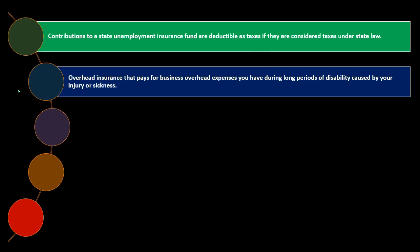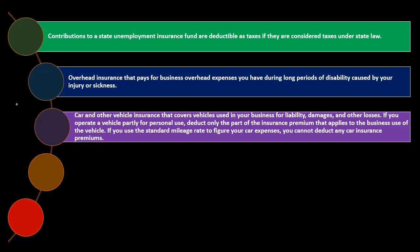Whether contributions to a state unemployment insurance fund are deductible as taxes is dependent on the state. Overhead insurance that pays for business overhead expenses you have during long periods of disability caused by your injury or sickness. Car and other vehicle insurance that covers vehicles used in your business for liability, damages, and other losses. If you operate a vehicle partly for personal use, deduct only the part of the insurance premium that applies to the business use of the vehicle. The proration is typically based on the ratio of business miles driven to total miles driven.